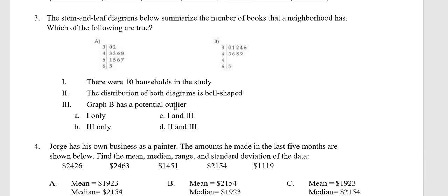Three, graph B has a potential outlier. Yes, 5. 5 is a potential outlier because this is actually the number 65. And so 65 is actually an outlier possibly because it's very far from the other numbers. So 65 is a potential outlier.